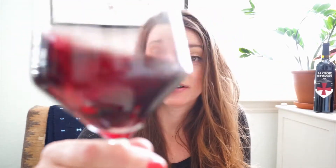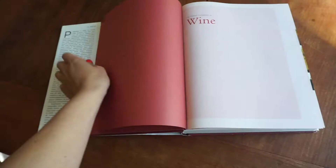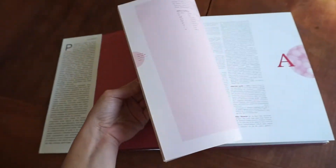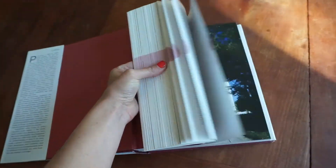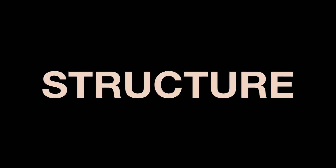Are you just getting into wine? Are you overwhelmed by all the terms that get thrown around when talking about wine? Acid, sugar, dry, sweet, tannin, body, alcohol — what's it all mean? My name's Alyssa, you're watching That Wine Show, and today we're breaking down structure.